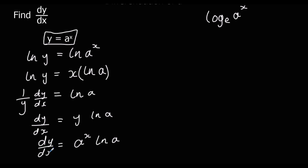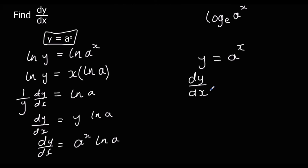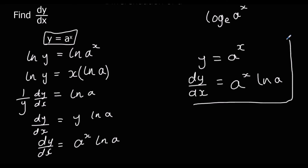So dy/dx is a^x ln a. This is the result you need to remember: if y equals a to the power of x, then dy/dx equals a^x ln a. That is a result you need to know.